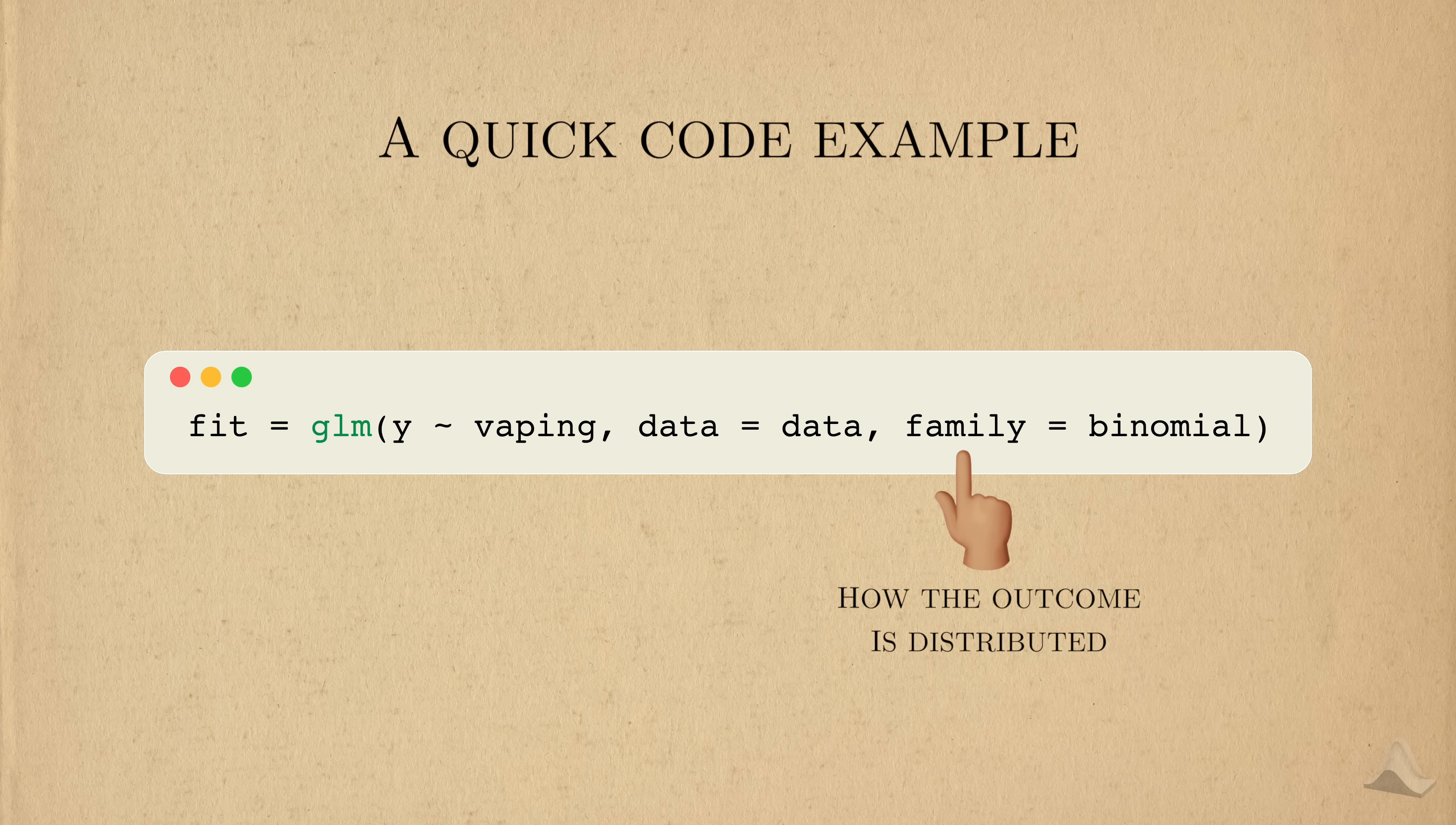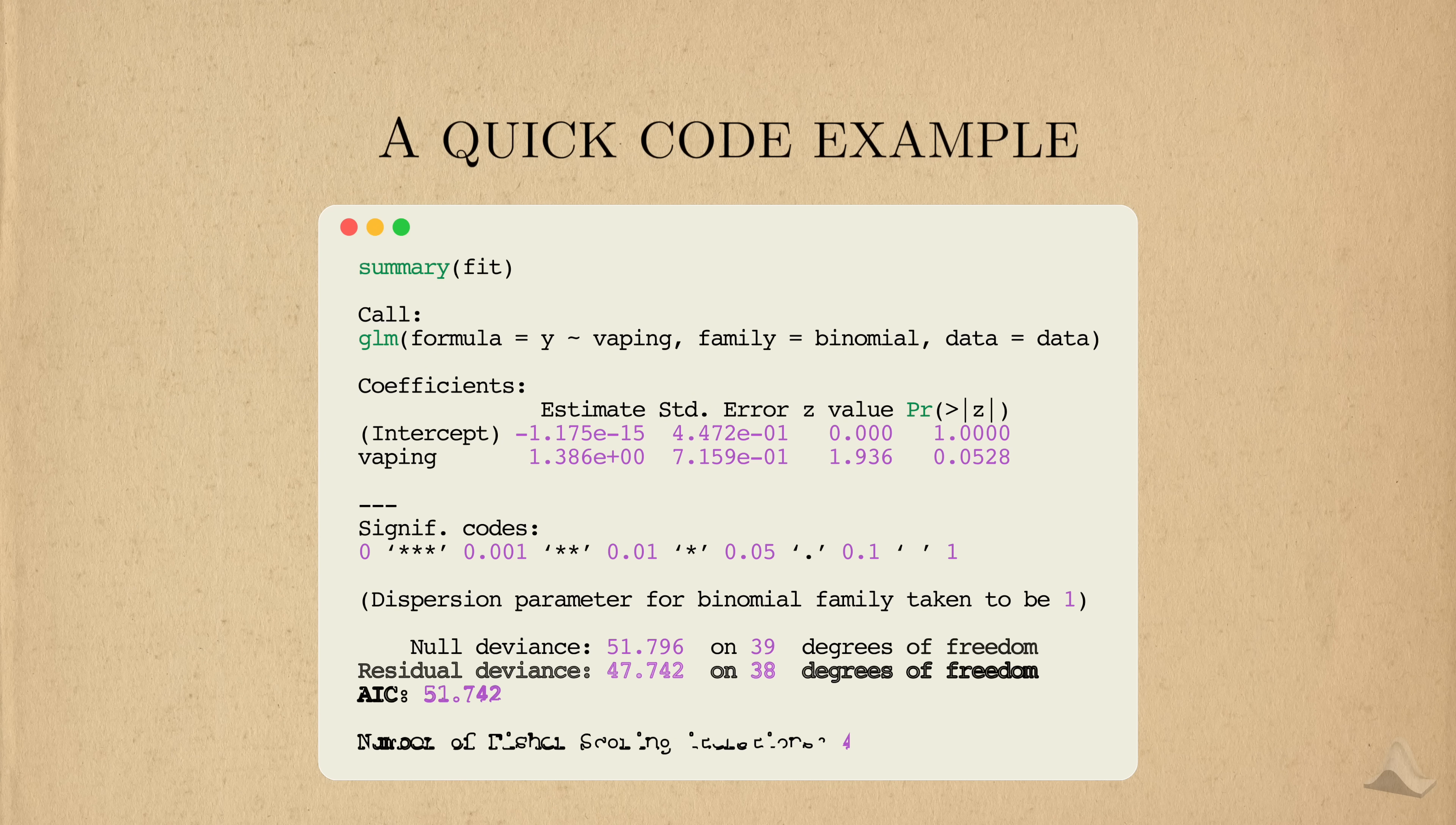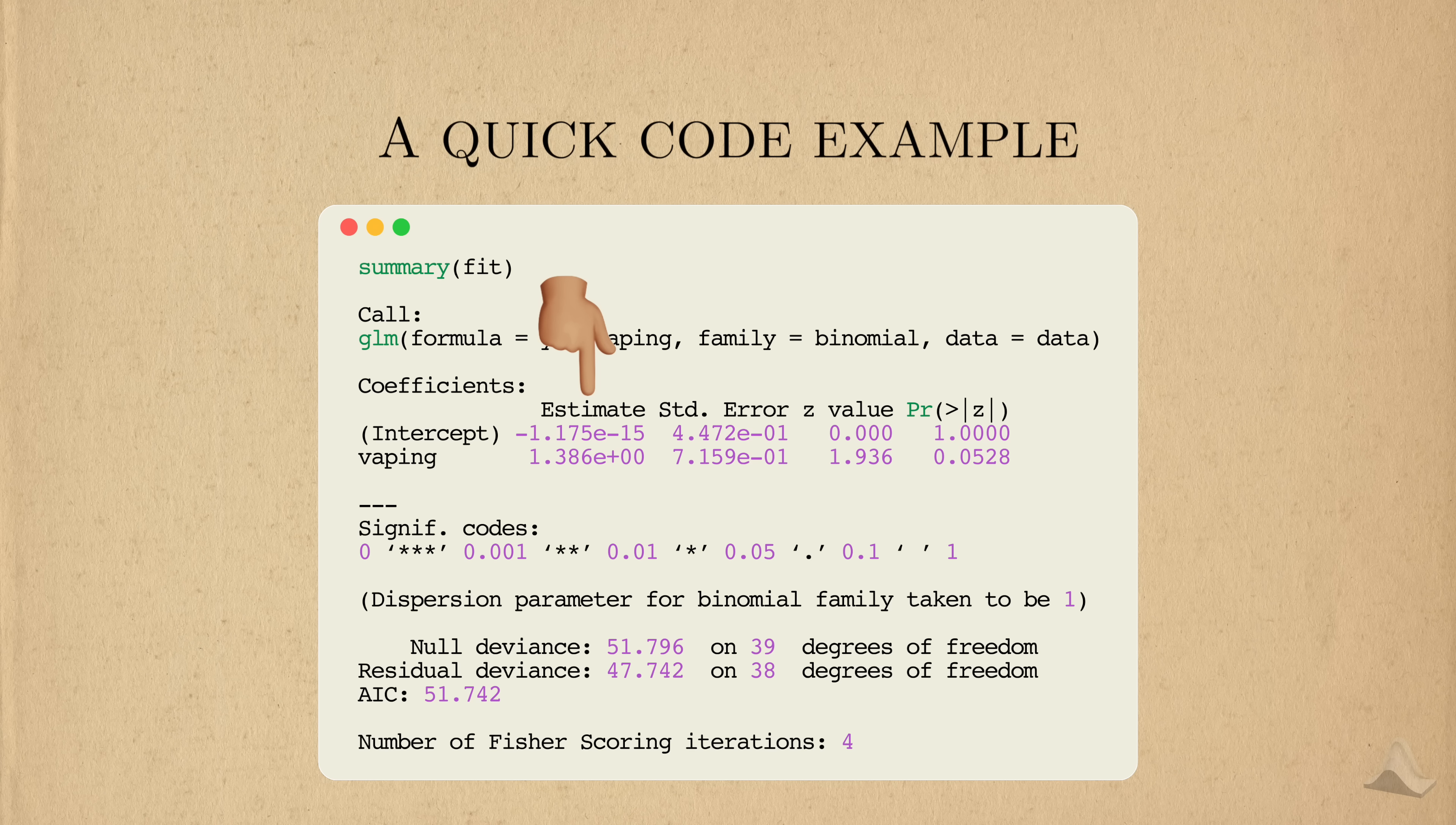The outcome is binary, so the corresponding family is the binomial distribution, which is closely related to the Bernoulli distribution we talked about earlier. We can quickly run this piece of code and get a summary of it like we did with linear regression. It gives us the estimates for the logistic regression coefficients, their associated standard errors, as well as a z value here.